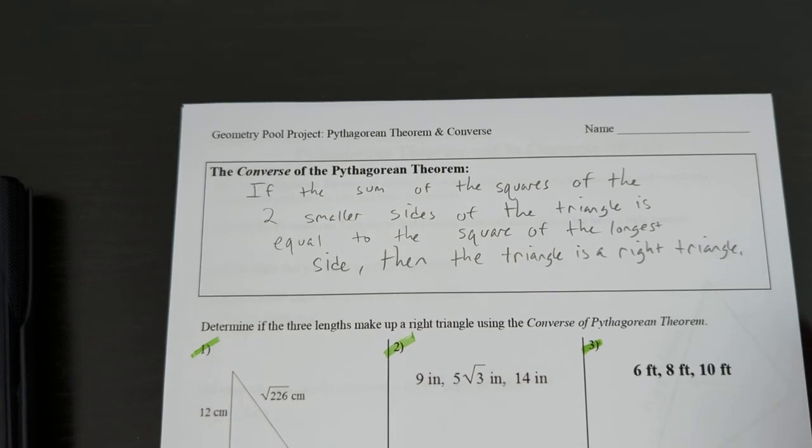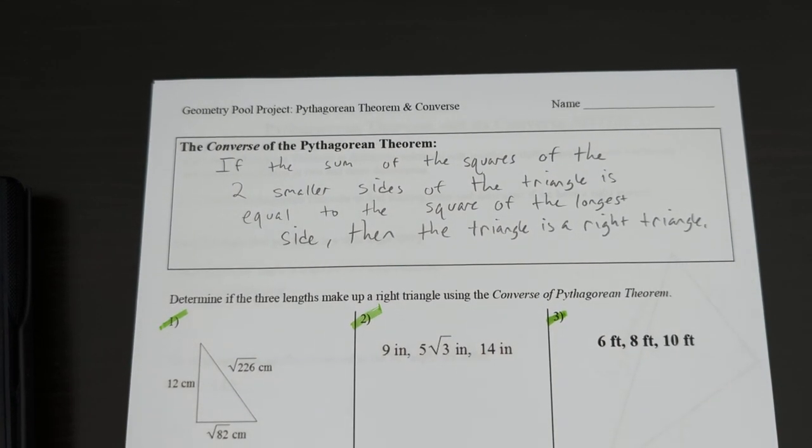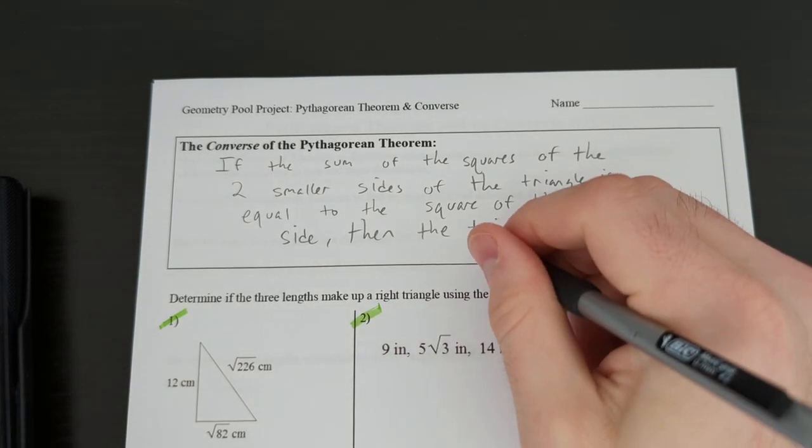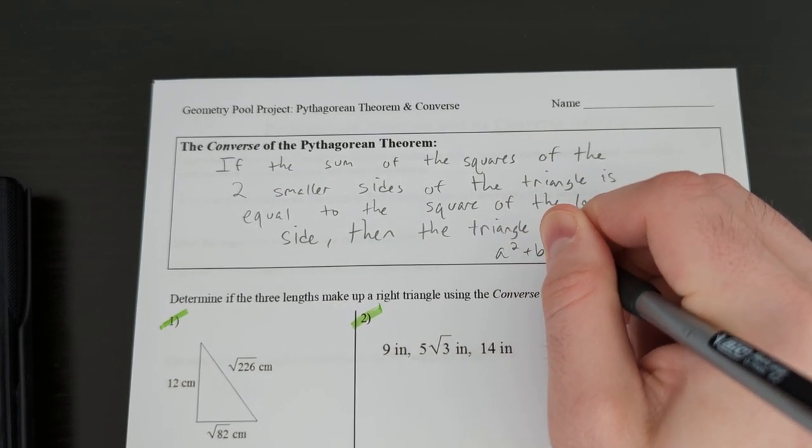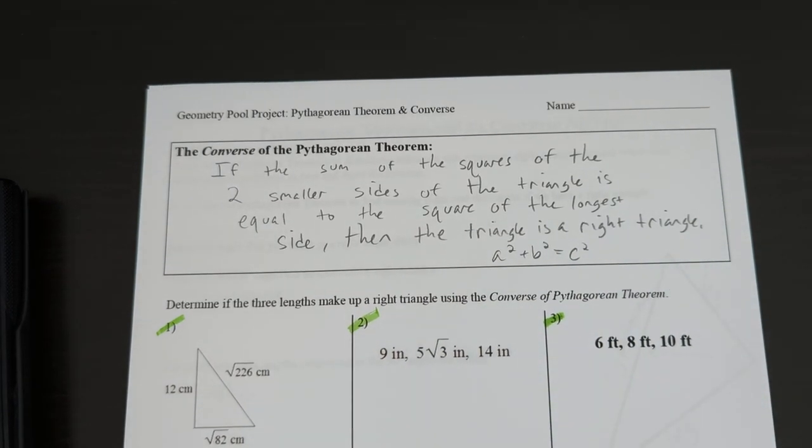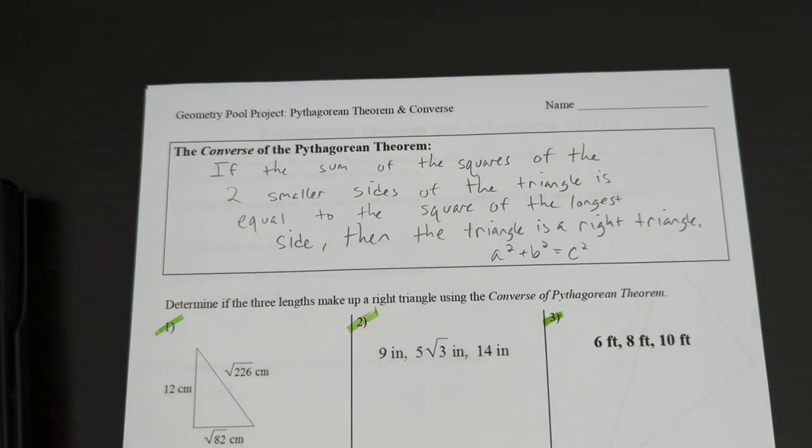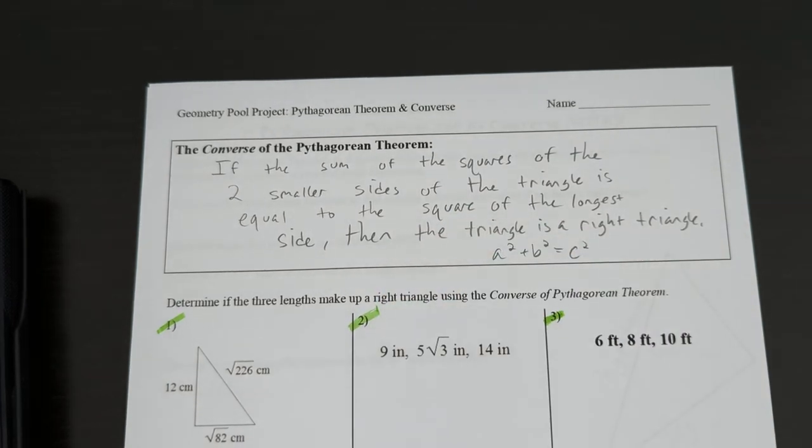So what that means is, essentially, if your equation, if both sides are equal to the equation a squared plus b squared equals c squared, if they're exactly the same number on both sides, you have a right triangle. If one side is bigger than the other, yes, it's a triangle. It's just not a right triangle. And that's what you're going to be determining on the back here.